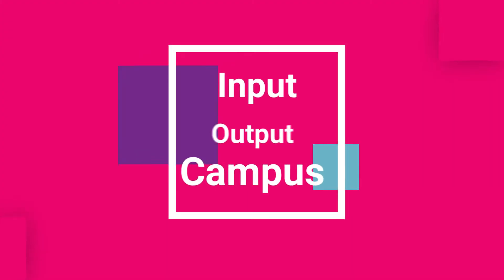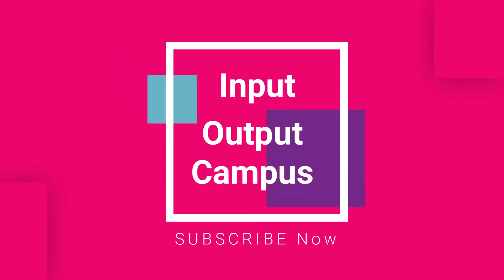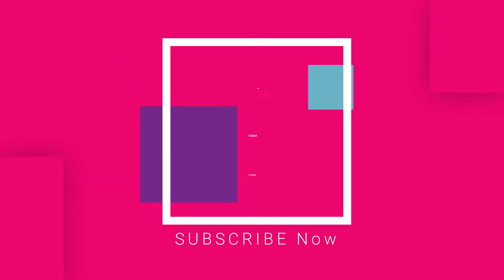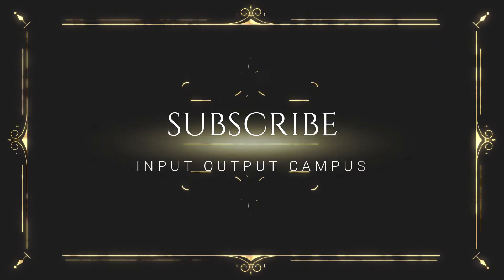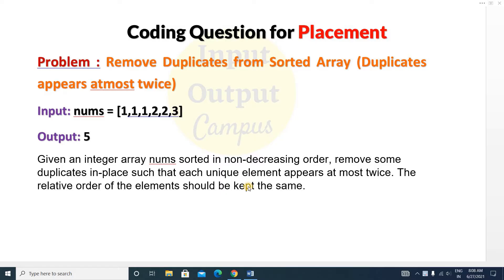Hello friends, welcome to Input Output Football. Today in this video we are going to see a new question, and this question is very important: remove duplicates from a sorted array, but here the twist is that duplicates appear at most twice.